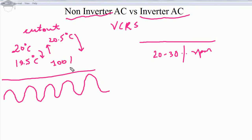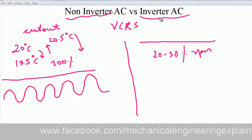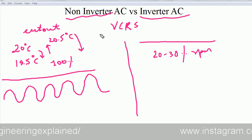In non-inverter AC, the compressor always acts at 100 percent load — it consumes 100 percent power whenever it is on. Whereas inverter AC only operates at 20 to 30 percent of the total power required. This also results in silent operation because the RPM is less, whereas in non-inverter AC the RPM is higher.